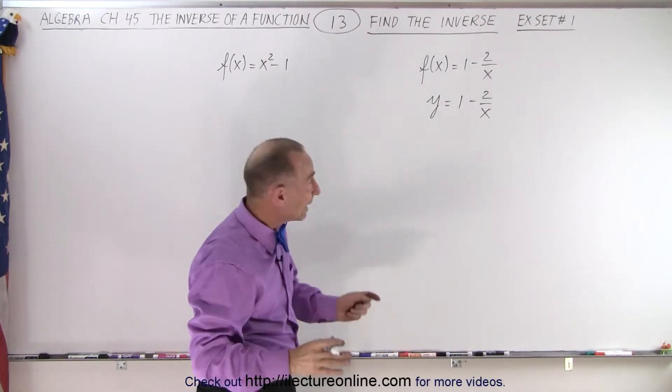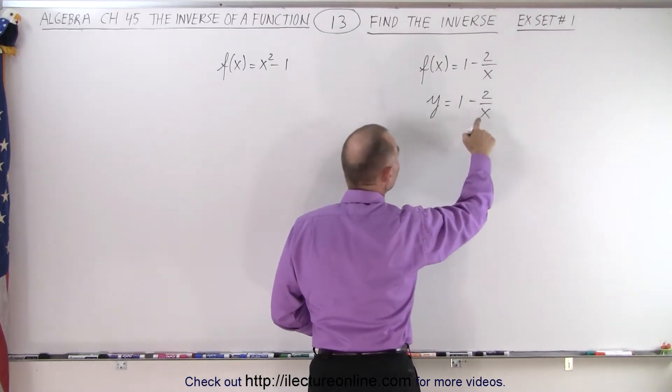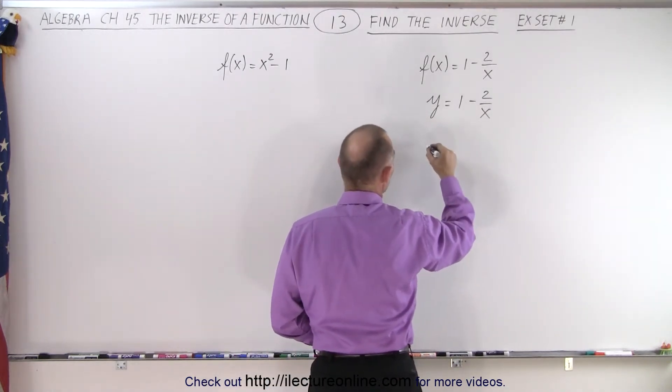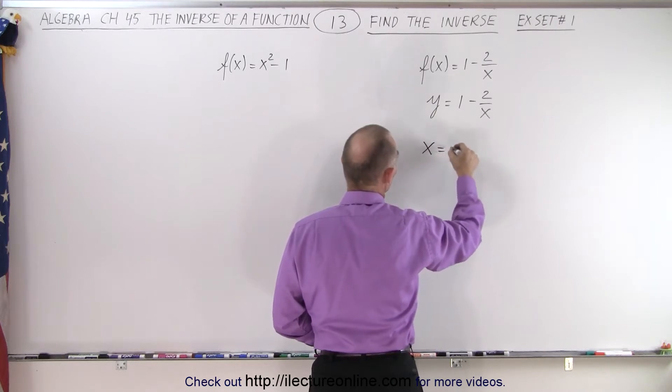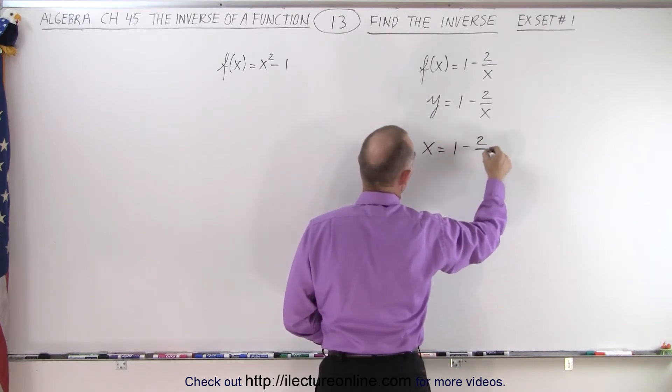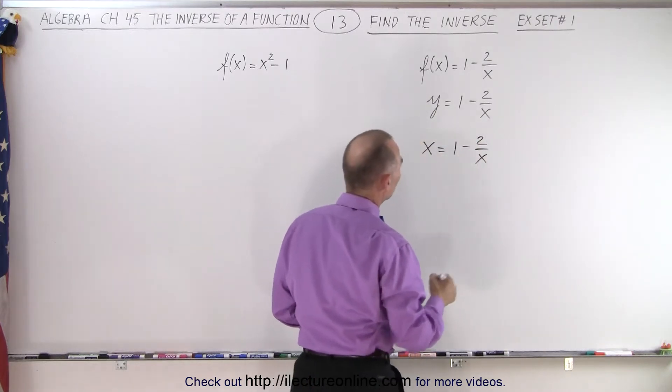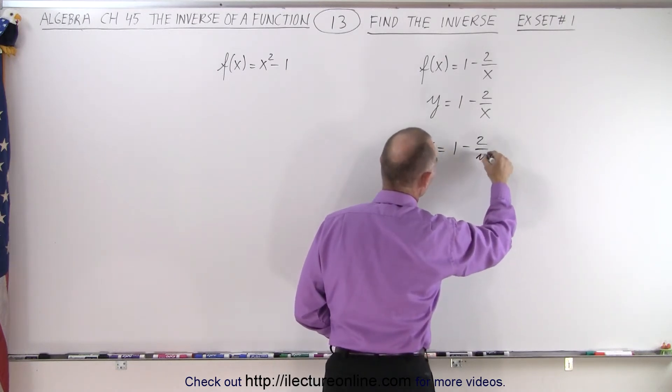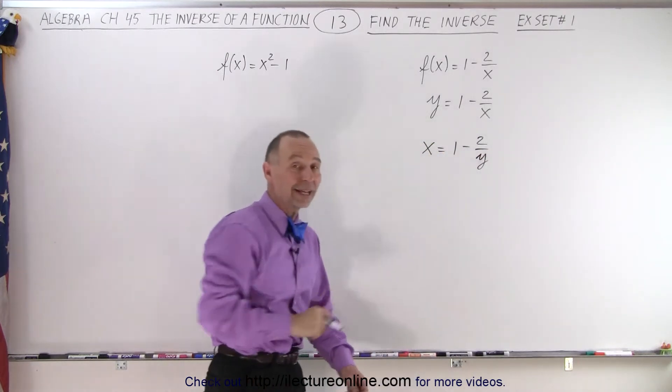And then we interchange the y becomes x and the x becomes y. So this we now write x equals 1 minus 2 over x. Oh, not over x, over y. Because I'm changing the x to a y and the y to an x.